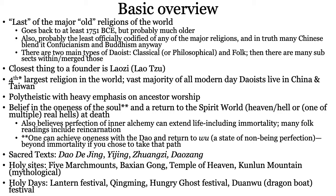Quick side tangent: Taoism spelled with a D uses the Pinyin version of translating Chinese to Western characters. Quite often you'll see it spelled with a T — T-A-O-I-S-M — which uses the older Wade-Giles method, entirely unacceptable on an academic level at this point. Things are moving toward Daoism with a D. It's pronounced 'Taoism' either way. That's also why you see names like Lao Zi and Lao Tzu — one is Pinyin, one is Wade-Giles.